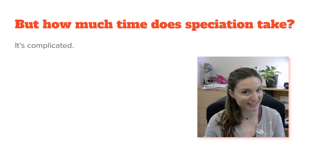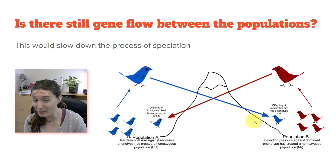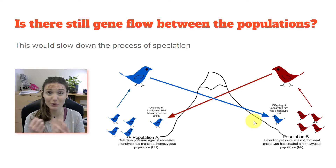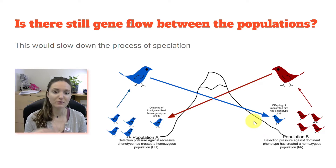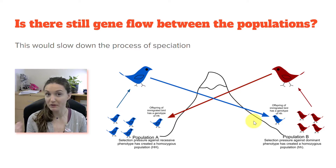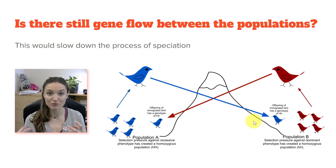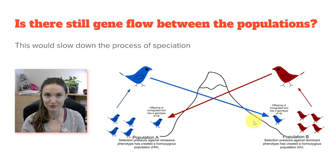How long do we have to keep those two populations separated before we can call them different species? That's a hard question — it's complicated, and there are a lot of factors. If there's still gene flow between populations, that obviously slows down the process of speciation. The more gene flow there is, the less likely or the slower speciation will happen. We can still have gene flow occur while speciation is happening — it just slows things down, because you're continuing to mix those genes and alleles, making the two groups more similar.